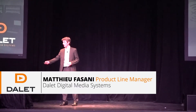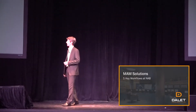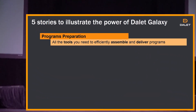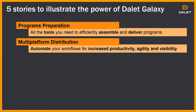This afternoon I would like to tell you five stories — five stories to explain what we can do with Dalet Galaxy in 2017 for your MAM scenarios. I will start with programs preparation, where having the appropriate tools at the appropriate step in the workflow is key to efficiently assemble and prepare all your programs. Then we'll move to multi-platform distribution, which is probably the most important and challenging thing you face every day: the ability to produce more without adding more resources. We'll see how you can automate your workflows and increase your productivity.